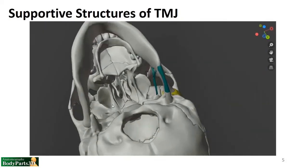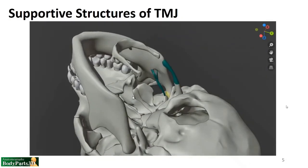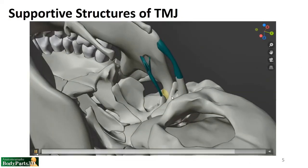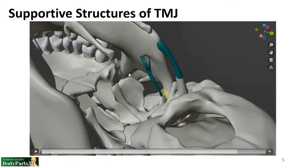Here is another view to see things a bit more clearly. Here is the stylomandibular ligament, and more medially, the sphenomandibular ligament. Imagine we're looking upside down — picture yourself in the oral cavity looking laterally, and that will help you interpret what the previous image was showing.